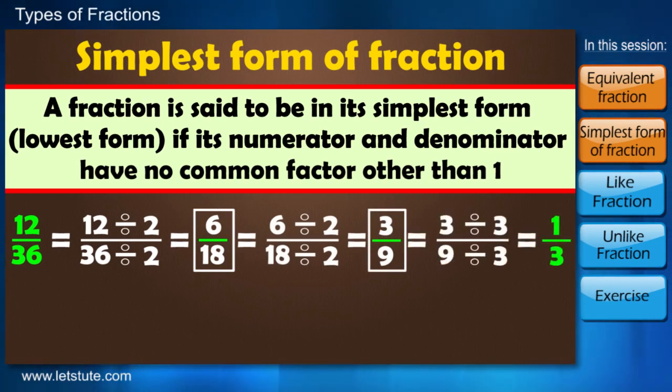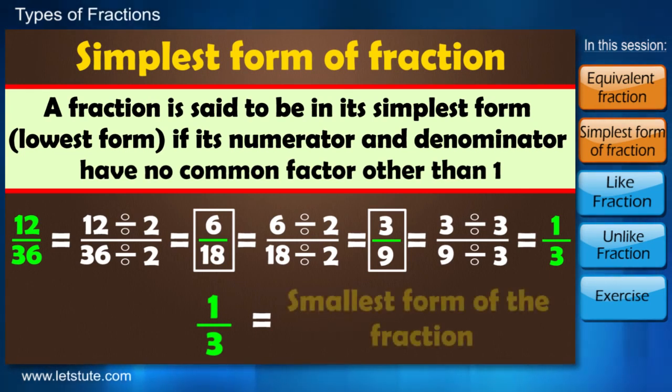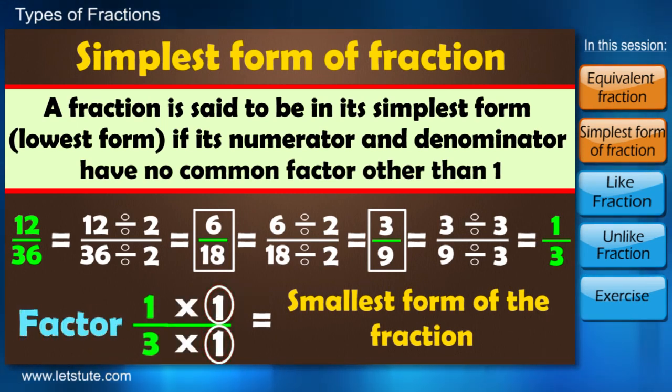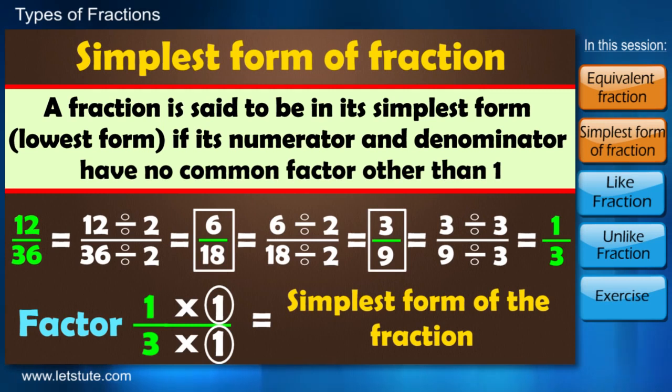Say for example, 12 by 36. Now here, 1 by 3 cannot be divided any further, so this will be the smallest form for the fraction 12 by 36. 1 and 3 have only one as a factor, hence these fractions are known as simplest form of fractions.